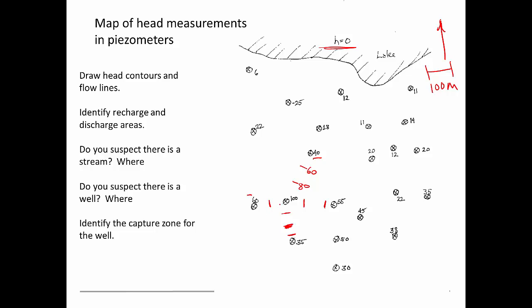So now I can draw these in and I've got an 80 contour that looks like that. A 60 contour goes through this point, through that point, there.